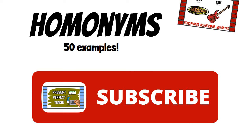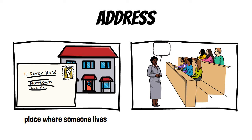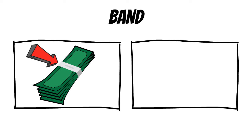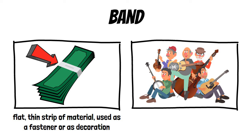The first word is address. The first meaning is a place where someone lives, and the second is a formal speech. Band: the first meaning is a flat, thin strip of material used as a fastener or as decoration, and the second is a group of people playing music.